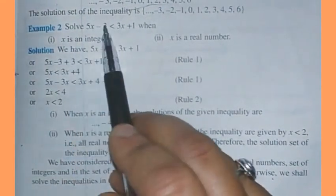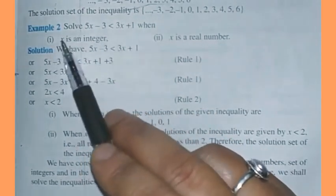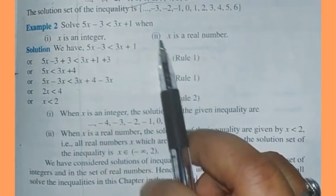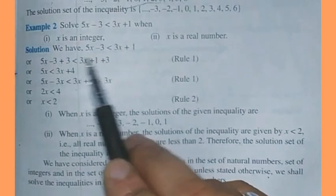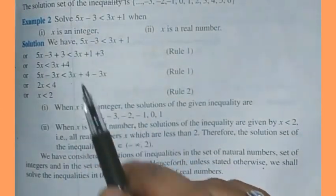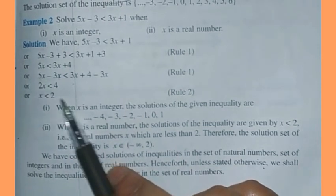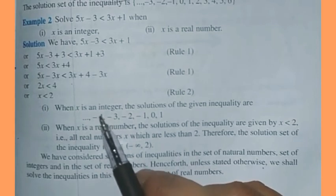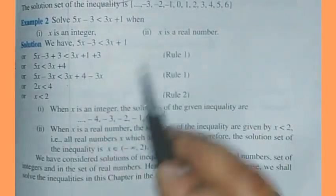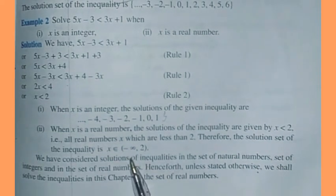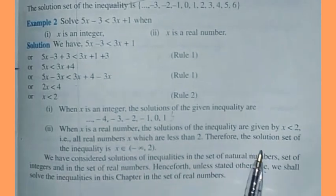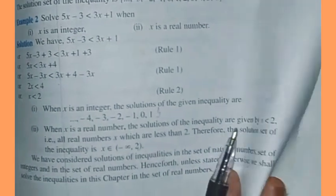Example 2: Solve the given inequality for two cases — x is an integer and x is a real number. Solving the inequality by moving all x terms to one side and constants to the other, you get x < 2. For integers, the solution set is {…, -3, -2, -1, 0, 1} listed in curly brackets. For real numbers, it is the open interval (−∞, 2), since the symbol is strict inequality and towards minus infinity the bracket is always open.